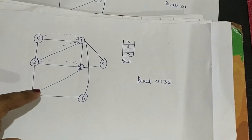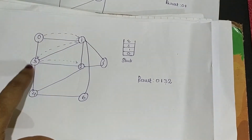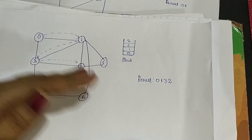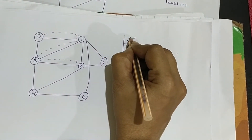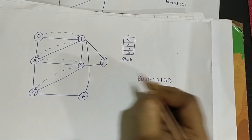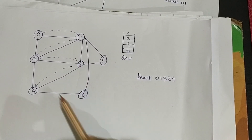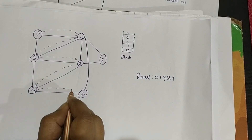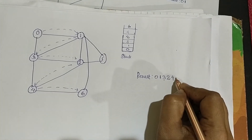Now we find the adjacent nodes of 2, which are 1, 3, 5, and 4. Nodes 1 and 3 are already visited, so we take unvisited nodes — either 5 or 4. I am going to take 4, inserting it onto the top of the stack and traversing towards 4, then printing it in the result. Node 4 has adjacent nodes 3, 2, and 6. Nodes 3 and 2 are already visited, so we traverse towards 6. Node 6 is pushed onto the top of the stack and printed in the result.